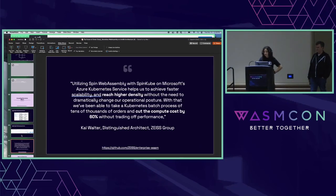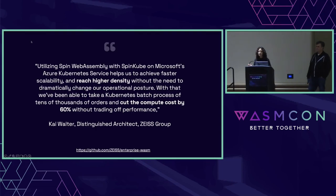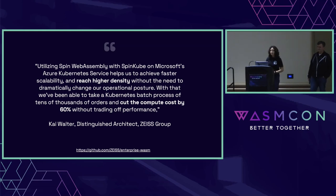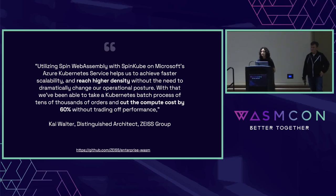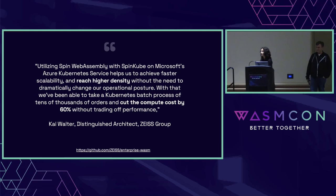Just to summarize: someone who's walked through this experiment of moving from containerized serverless to serverless with WebAssembly — the Zeiss group did this. Once they moved to SpinKube, they were able to reach a higher density without losing performance. This resulted in them cutting the cost of compute by 60%. Part of this cost cut was because once they moved to WebAssembly and achieved higher density, they could choose what architecture worked for them — so they switched to Ampere-based VMs in Azure, which were less expensive as well.